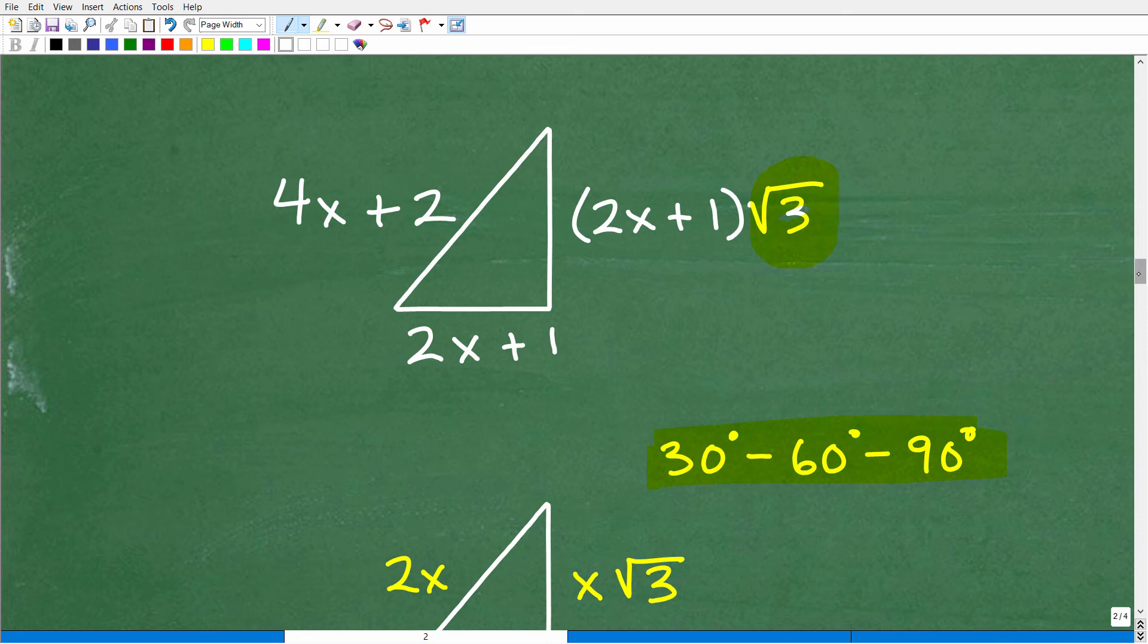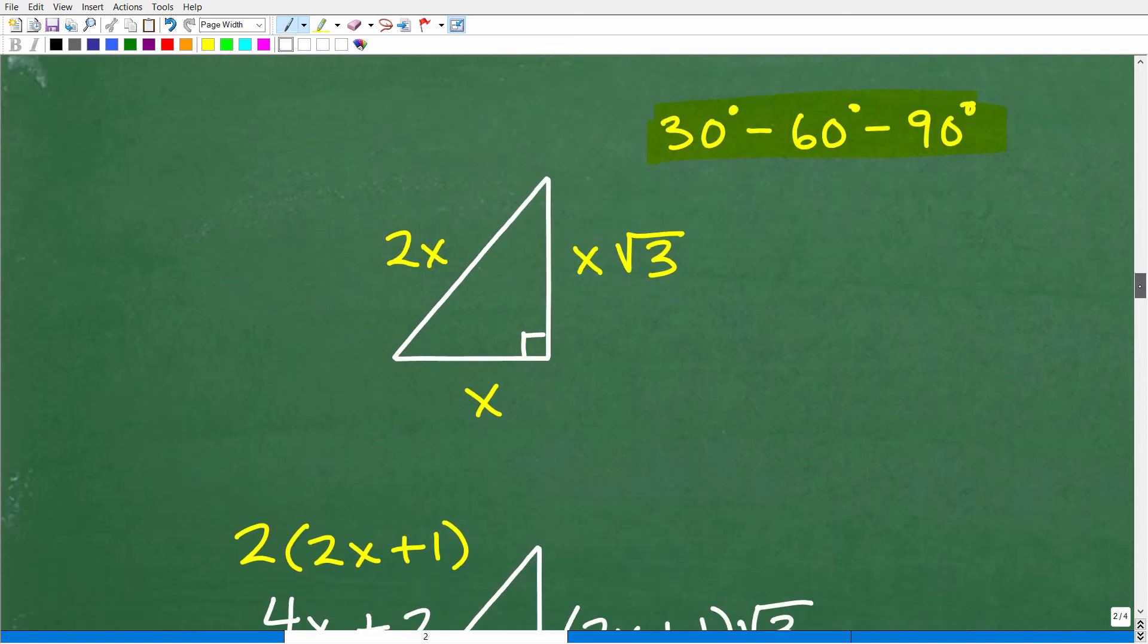But basically here, by the way, the other special right triangle you need to know is the 45-45-90. But here is the 30-60-90 right triangle, okay? So whatever this side is, our smallest side, x, if we double that, by the way, this is 60 degrees here, and this would be 30 degrees right there, okay?